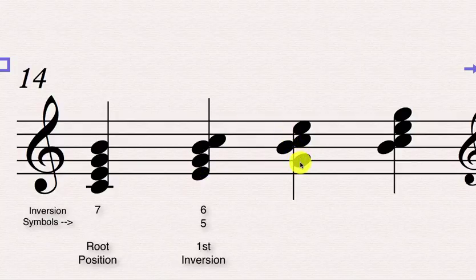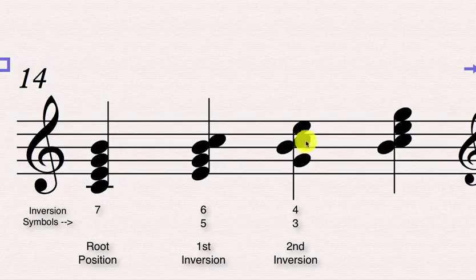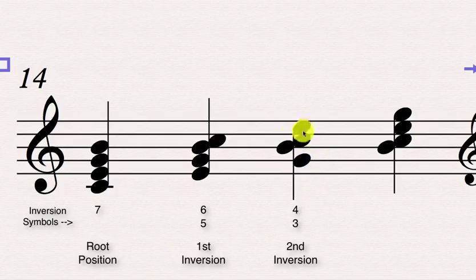Going to the second inversion seventh chord — this is with the fifth of the chord in the bass as the lowest sounding note. The inversion symbol for this is 4-3. Notice, if you go up a sixth from the bass note you get E, then you go up a fourth to C, and a third to B. Over the development and usage of these inversion symbols, we've dropped the 6 from the full figure. So we just call this 4-3.